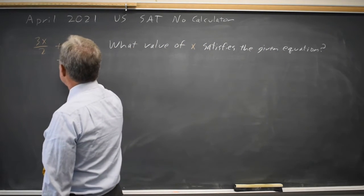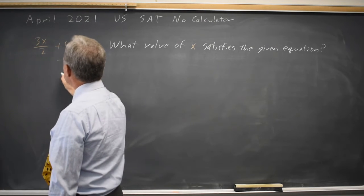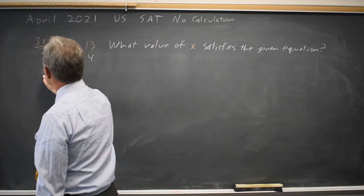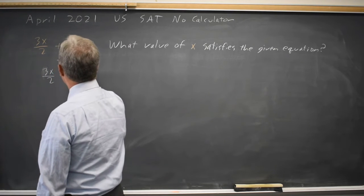So I'll collect similar terms. I'll subtract 4 from both sides to get all the constants on the right. And I have 3x over 2 equals 13 minus 4 is 9.